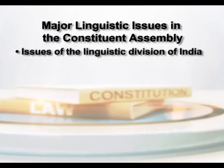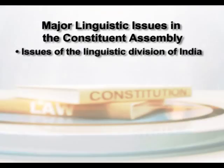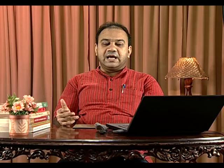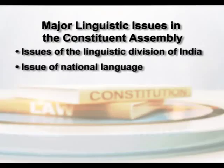The Constituent Assembly was faced with several linguistic issues. One of the major issues was the linguistic division of India, a demand the Congress had never earlier fully rejected — neither fully accepted. So the Congress position during the Constituent Assembly was a bit ambivalent. There were also questions of the national or official language, its script and how languages would be used. The issue of linguistic minorities was another topic debated in the Constitution.